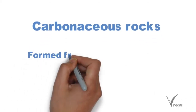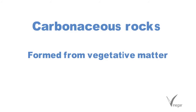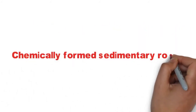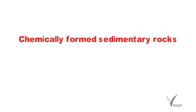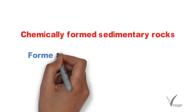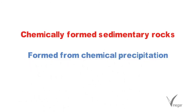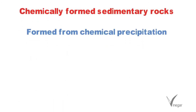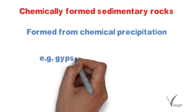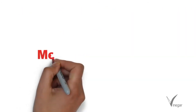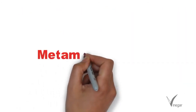Carbonaceous rocks are also organic in nature and are formed from vegetative matter in swamps and forests. Chemically formed sedimentary rocks are formed by the chemical precipitation of solutions — an example being gypsum, which is formed by the evaporation of salt lakes.